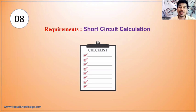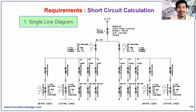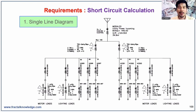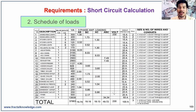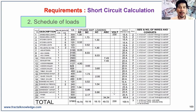Now let's proceed to the requirements of short circuit calculation. First, you need to have a single line diagram reflecting all the electrical components. When you are invited to do the electrical design analysis of a certain establishment, whether commercial or industrial, you need to see the single line diagram because that is the number one requirement to start electrical design analysis. The second requirement is to get the schedule of loads, which includes the kVA load, load current, the size of wires, and when available, the length of wire.